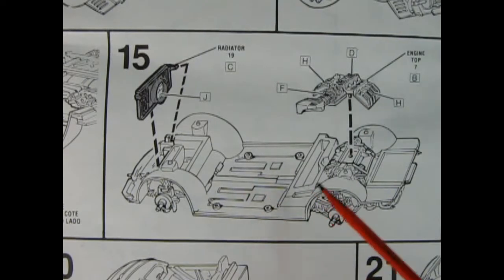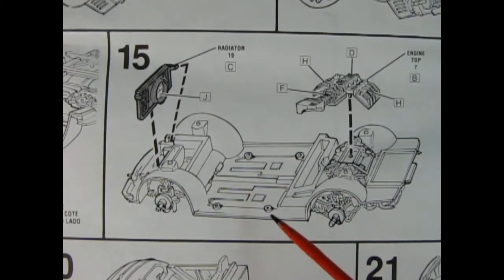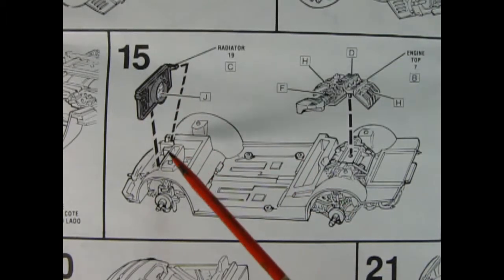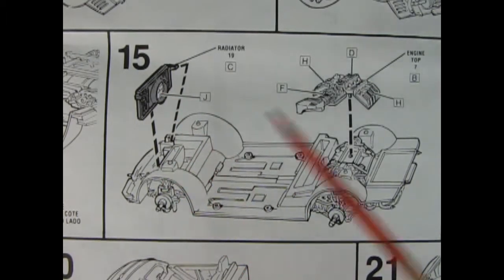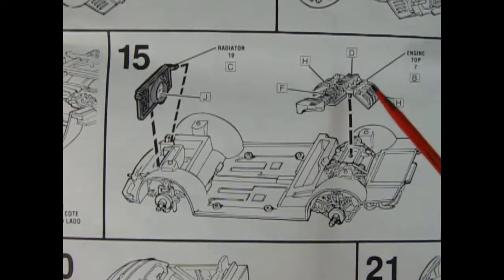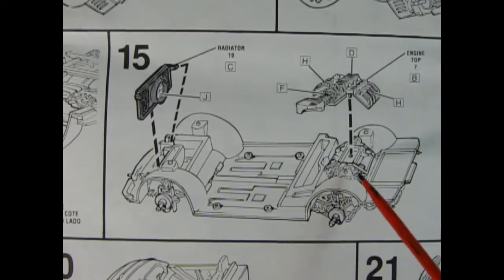Okay so now we flip the chassis over so that it is in the correct position as we would see it on the street car. So we're dropping our radiator straight down into the front of the chassis and then we've got our engine top which is clicking in place on top of our engine block.